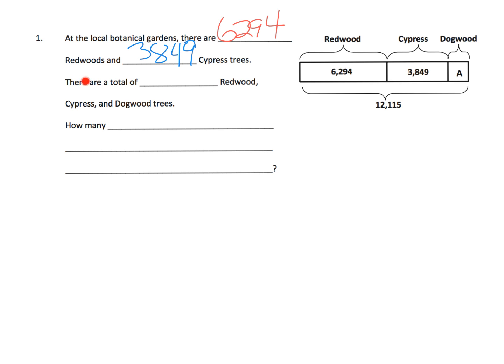And then it says there are a total of blank redwood, cypress, and dogwood. So that means they're looking for the total. And in that case, it's 12,115 because it says so right here.